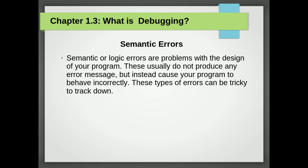The third type of error is the semantic error. If there is a semantic error in your program, it will run successfully, in the sense that the computer will not generate any error messages. But it will not do the right thing — it will do something else. Specifically, it will do what you told it to do. The problem is that the program you wrote is not the program you wanted to write. The meaning of the program, its semantics, is wrong. Identifying semantic errors can be tricky because it requires you to work backward by looking at the output of the program and trying to figure out what it is doing.